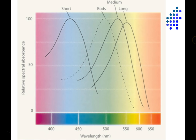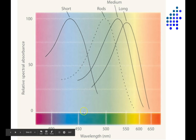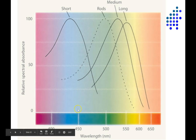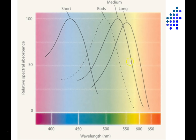Let's say I'm looking at a surface that's bouncing back mainly short wavelengths of light, let's say right around 425 or 450 nanometers. Under most conditions, we would perceive that as being blue. You can see that the short wavelength cones would be the most activated. The medium and long wavelength cones wouldn't be very active at all because that 420 to 450 nanometer light is barely within the range that these are sensitive to.